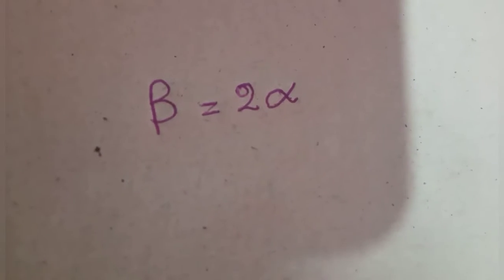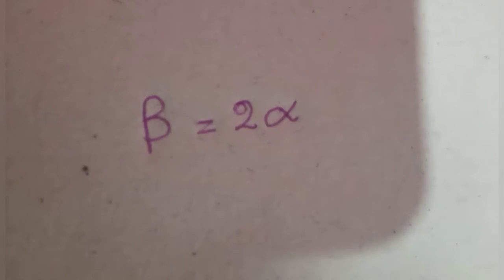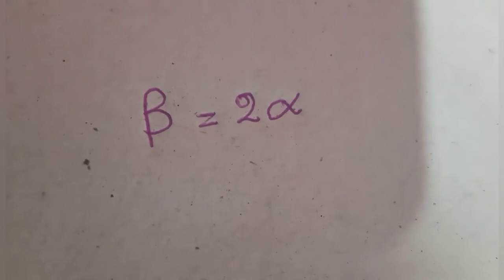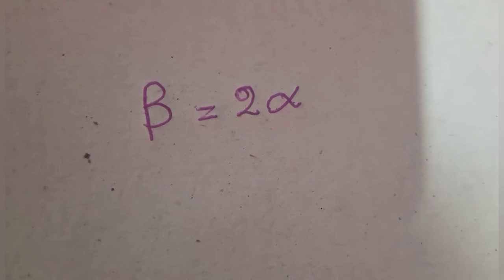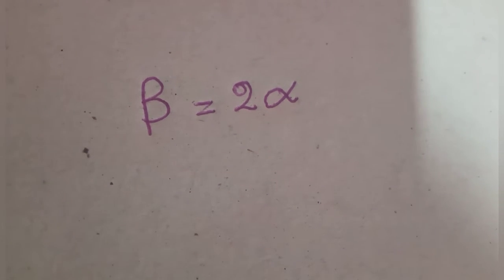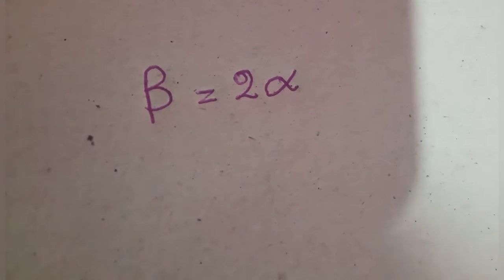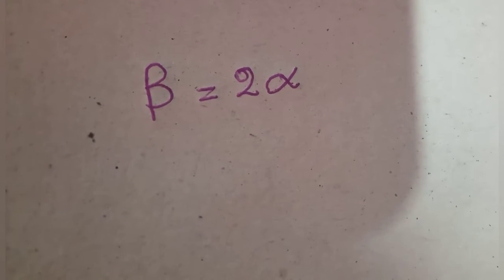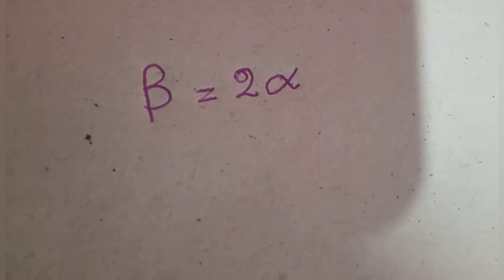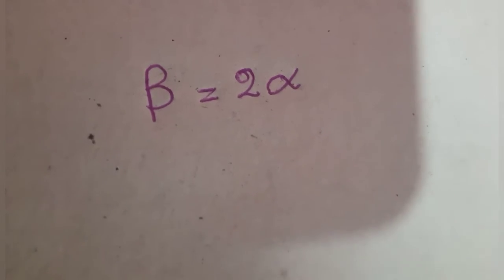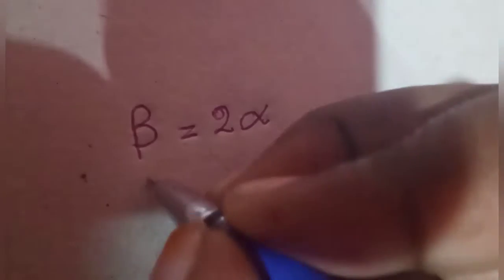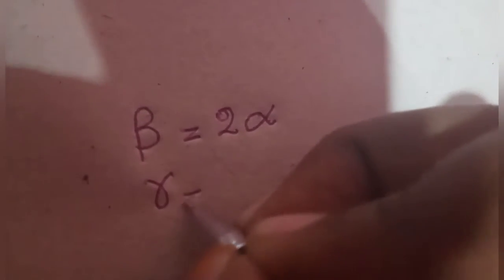The alpha is 1.5. The alpha is 2 alpha. The beta is 2 alpha. The gamma is 3 alpha.